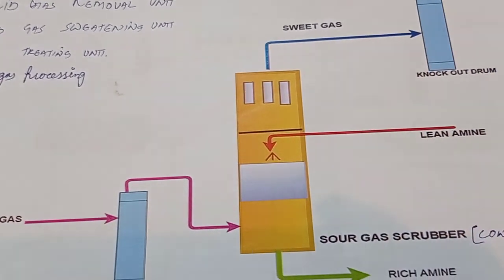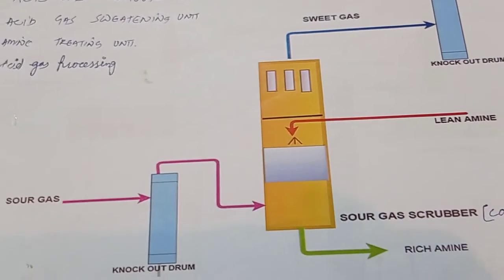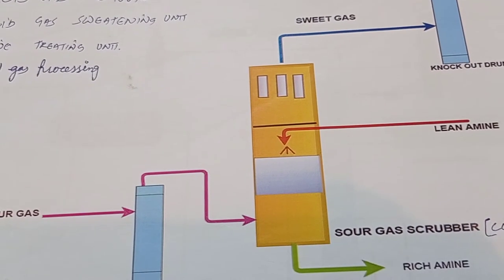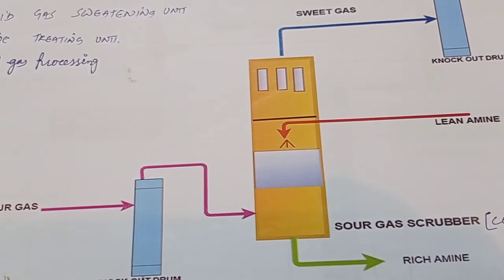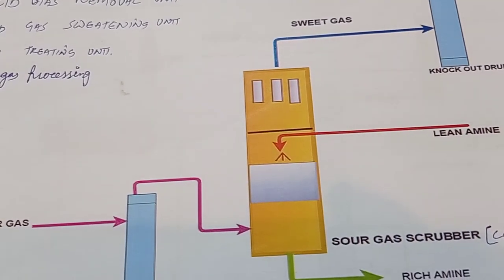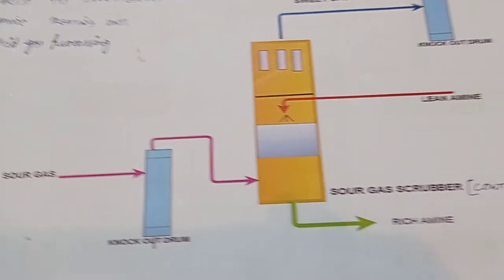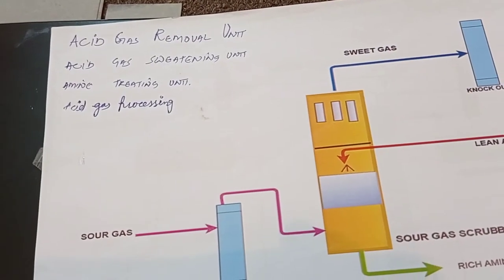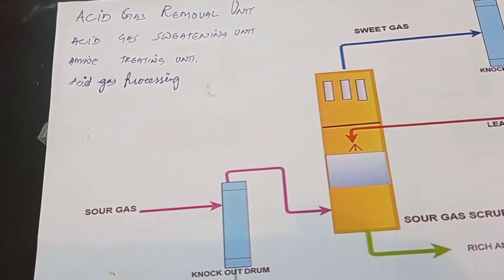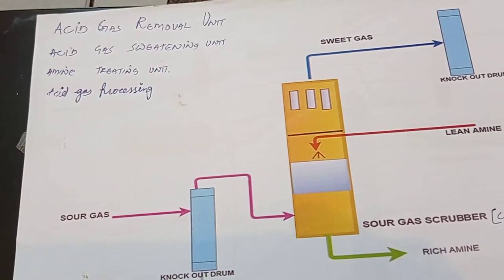The gas leaving the scrubber — now free of H₂S — is called sweet gas, whereas sour gas contains noticeable H₂S. Sweet gas can be burned in a furnace to produce steam, which drives a steam turbine to generate electricity. This is the acid gas removal unit. We have now covered hydrotreating, desulfurization, and acid gas removal in the sulfur cycle.